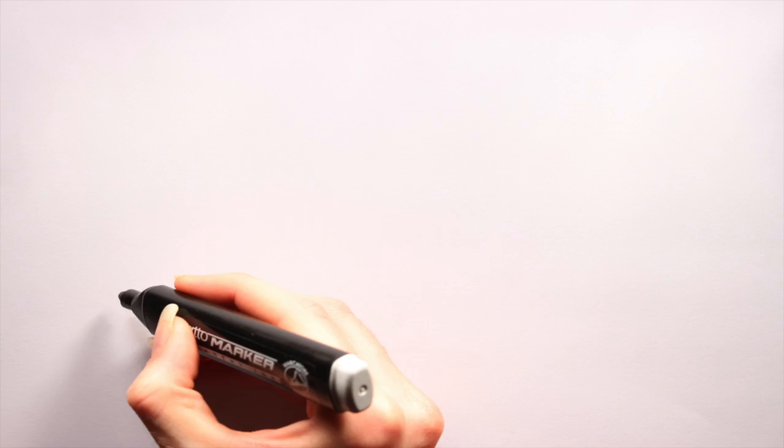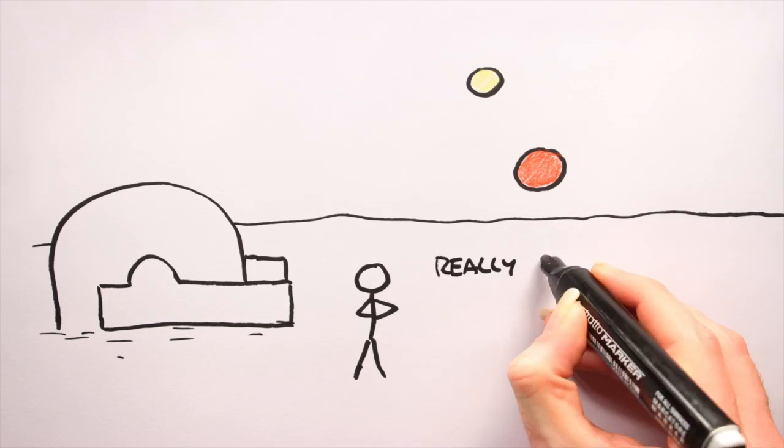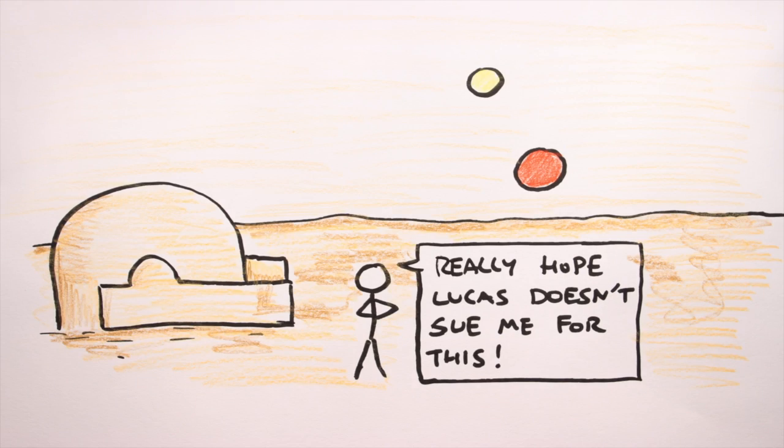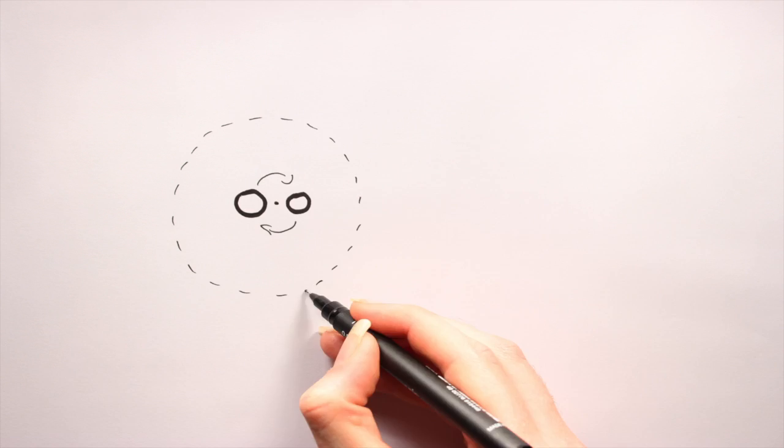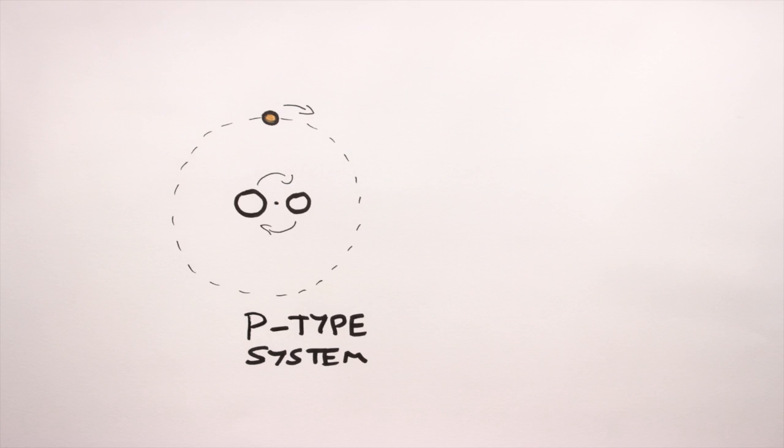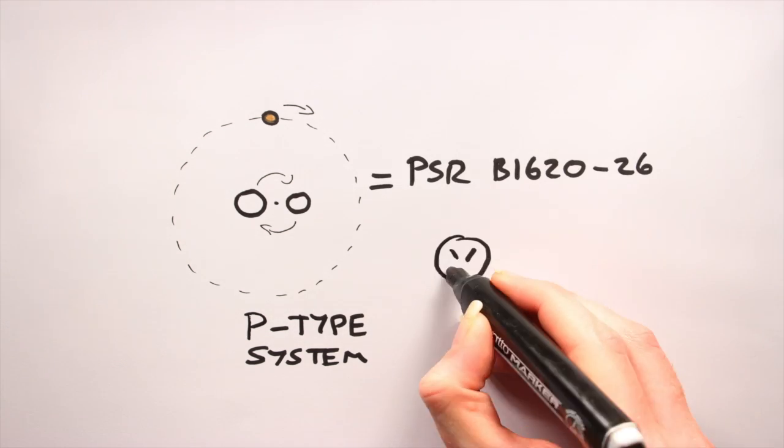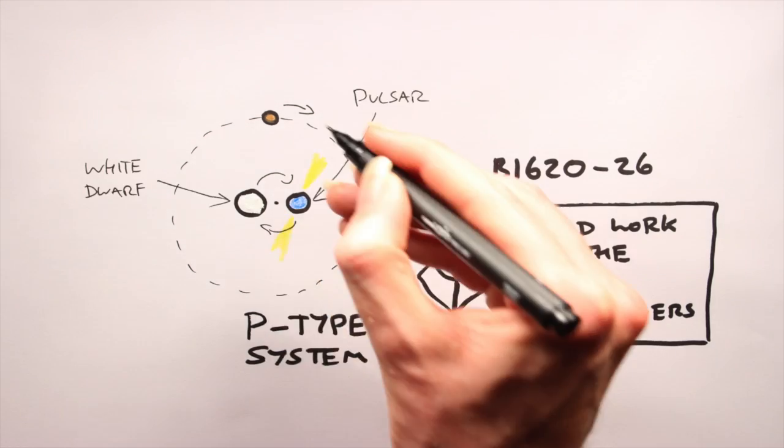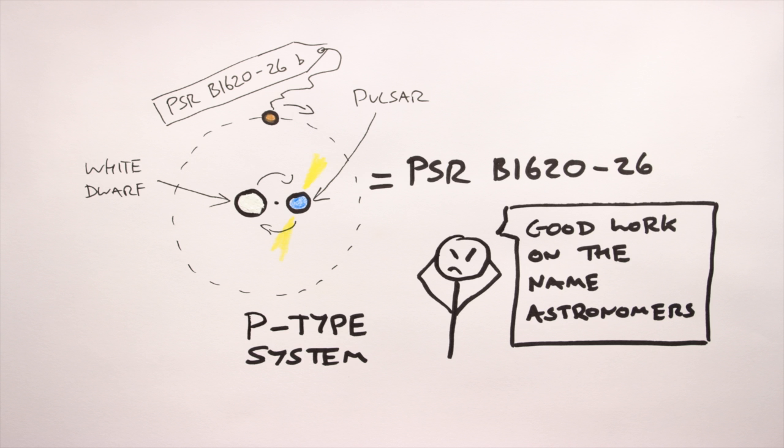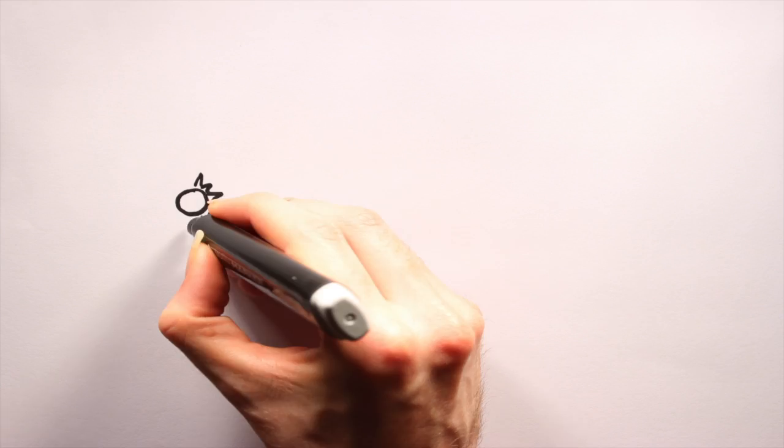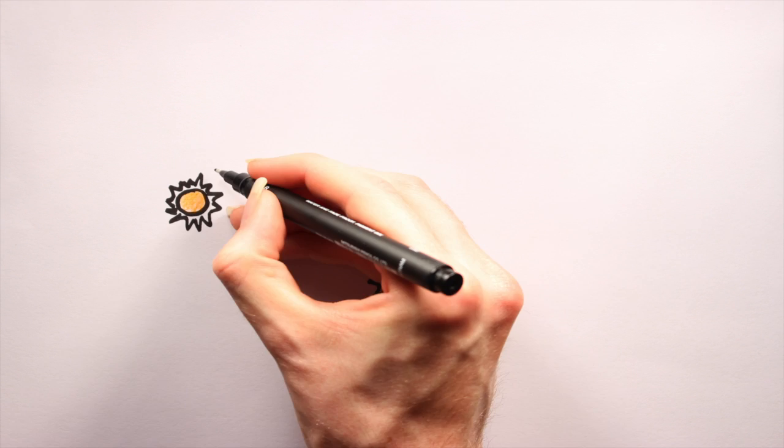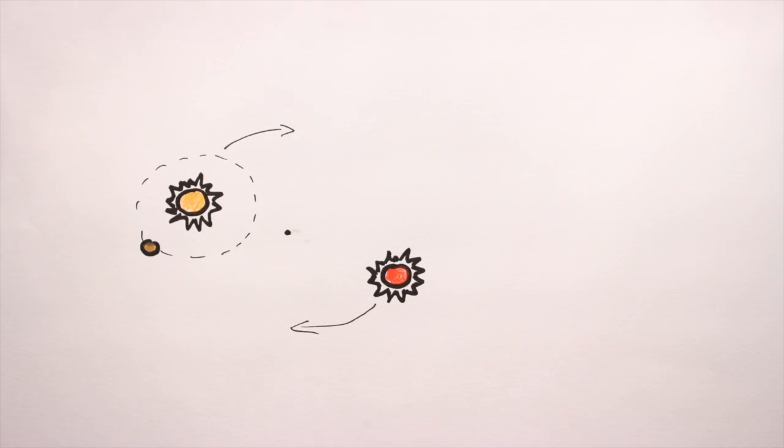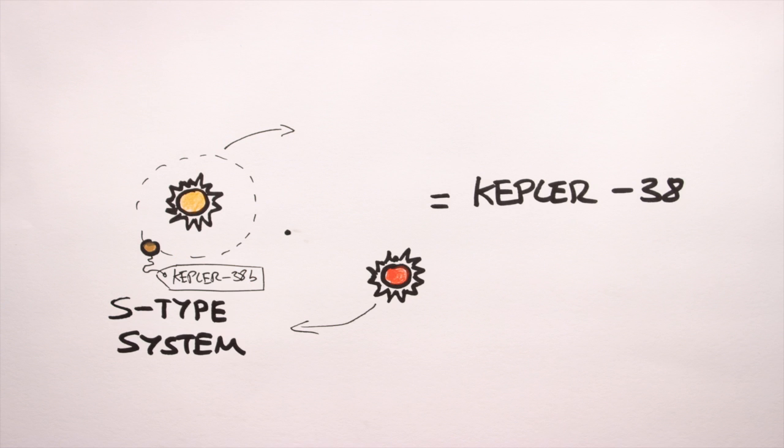Tatooine Systems. The Tatooine system depicted in the Star Wars movies is a P-type system. A P-type system is one where the two suns are relatively close together, and any planets present orbit both of the stars. The PSR-B1620-26 system is an example of a real-life Tatooine. On the other hand, S-type systems like Kepler 38 occur when the pair of stars orbit each other relatively far apart, and any planets present orbit only one of the stars.